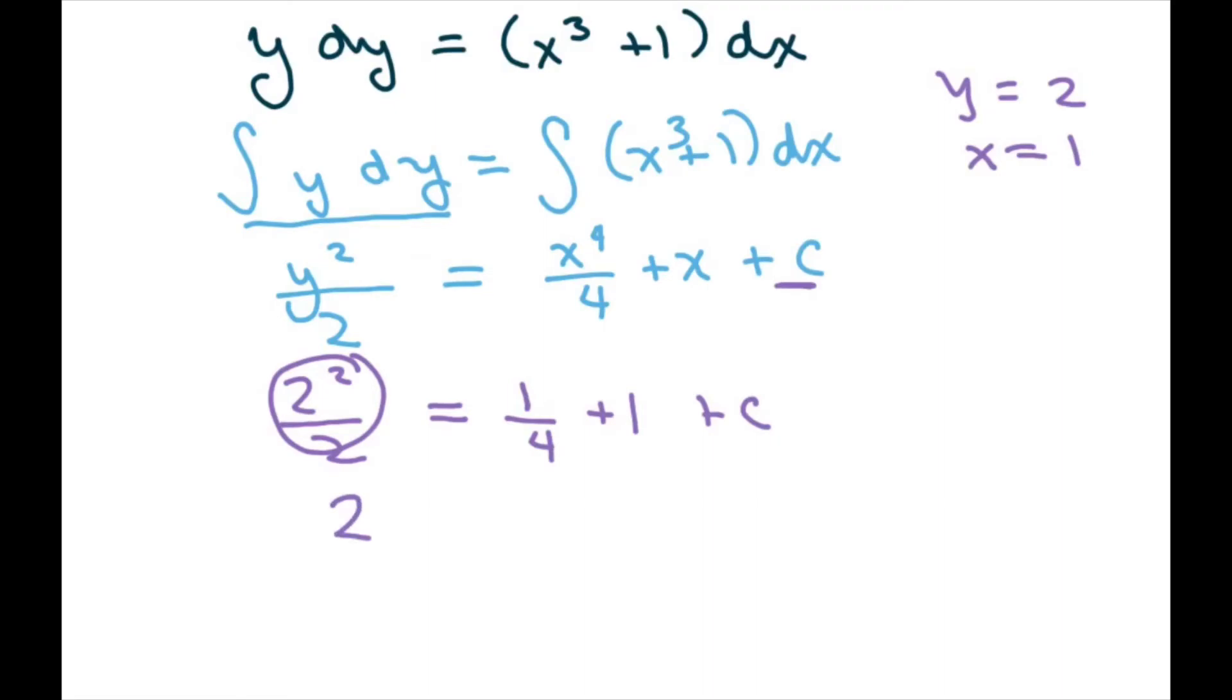And then we want to subtract. I can write this as 4 over 4. So we're going to subtract the 5/4ths. And this equals c. And if I have a 4 here, so it's going to be 8/4ths minus 5/4ths equals c. So c is 3/4ths.